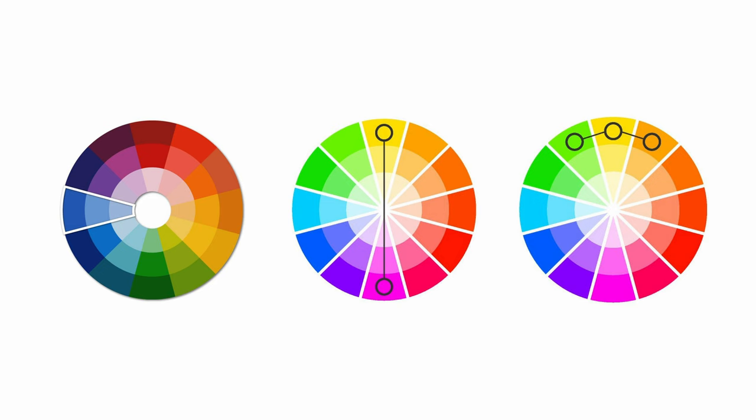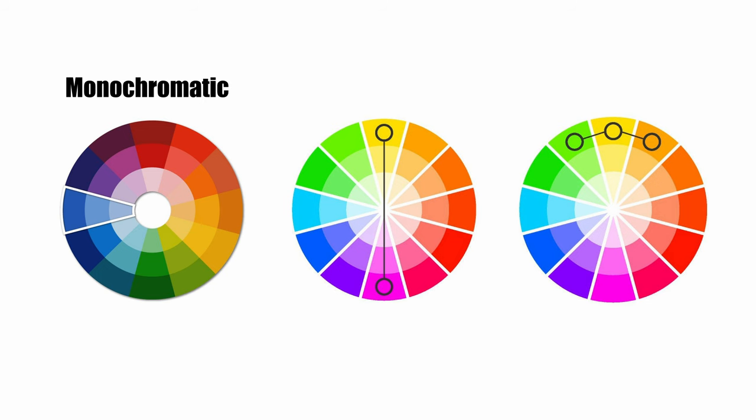The other thing I want to run through really fast is color schemes. I'm sure you're familiar with the color wheel and all the different color schemes, but I just want to run through the three most popular in lighting and in color. The three most popular color schemes are monochromatic, complementary, and analogous.